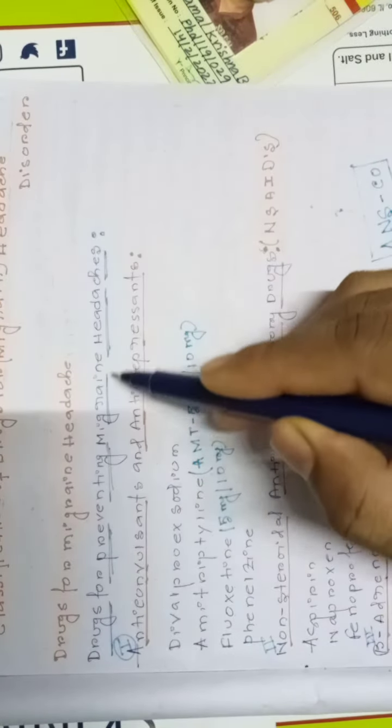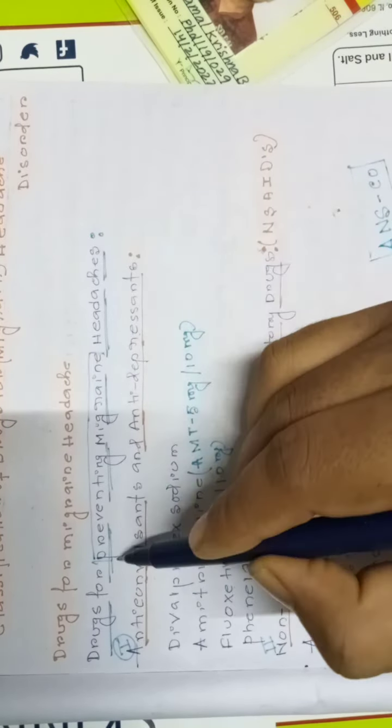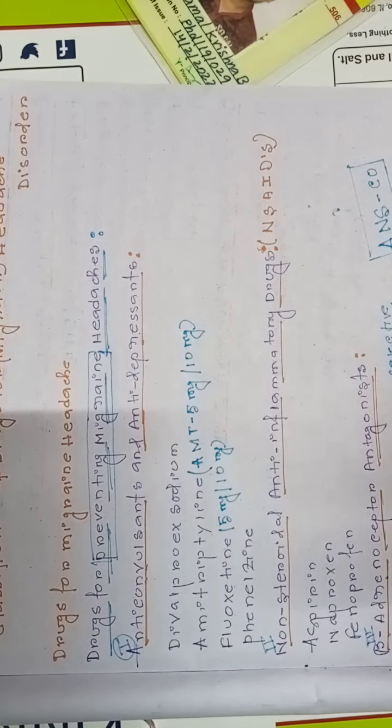If you see, these are drugs for preventing migraine headache. This is an important line - drugs for preventing migraine headache. These are the classes of drugs that come under migraine headache.